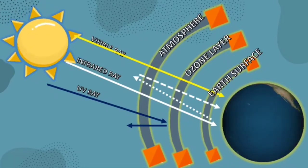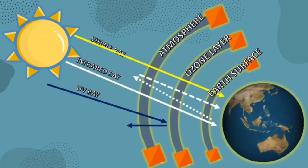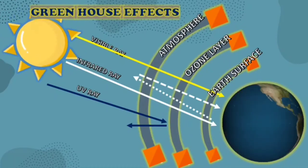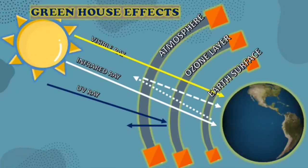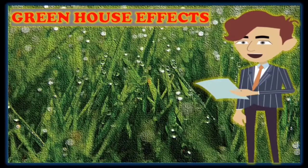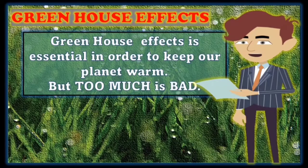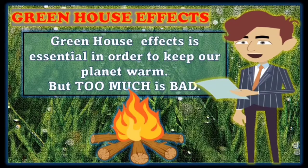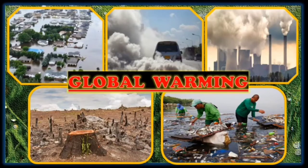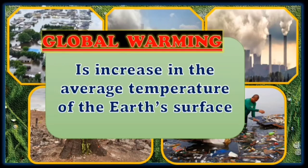The warm heat that we feel comes from the sun. The exchange of incoming radiation that warms the Earth's surface is what you call the greenhouse effect. The gases involved are called greenhouse gases, which include carbon dioxide, methane, water vapor, and chlorofluorocarbons. The greenhouse effect is essential in order to keep our planet warm, but too much is bad. When there is excess heat, it will burn. As time passes by, human activity has changed the Earth's atmosphere. The amount of greenhouse gases has increased and continues to increase, trapping too much heat, and this excess greenhouse effect results in global warming — an increase in the average temperature of the Earth's surface.